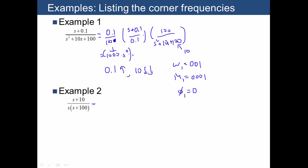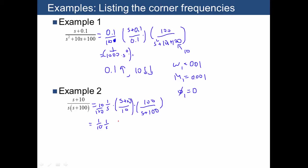For the second term, we have 1 over s and we have s plus 10, which we'll divide by 10, which means I put a 10 over here, and then we also need to multiply by 100 and divide by 100, so I need 10 over 100. This gives us 1/10 times 1 over s times those two terms.